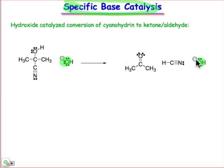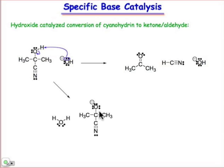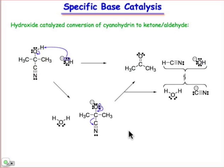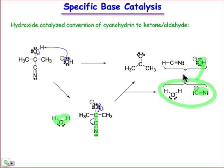Here, a strong base — hydroxide — is the catalyst. It doesn't enter into the stoichiometry; we see it on both sides of the equation. Prior to the rate-determining step, it undergoes a proton transfer that sets up the conjugate base of this cyanohydrin alcohol group. That oxyanion is all set up to do a beta elimination — this is the E1CB mechanism. The water produced here will re-equilibrate with the cyanide group lost in the beta elimination step, regenerating hydroxide so it can re-enter the catalytic cycle.